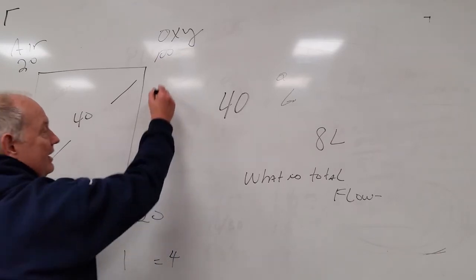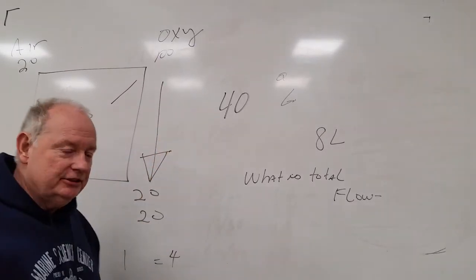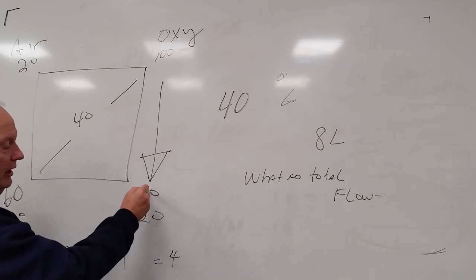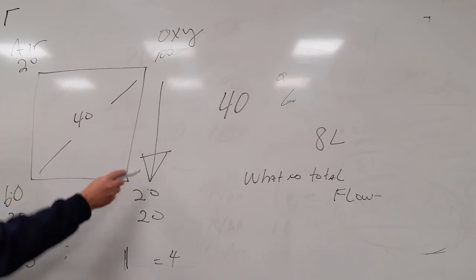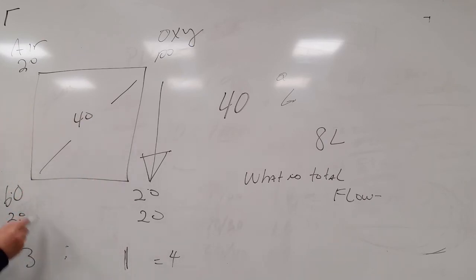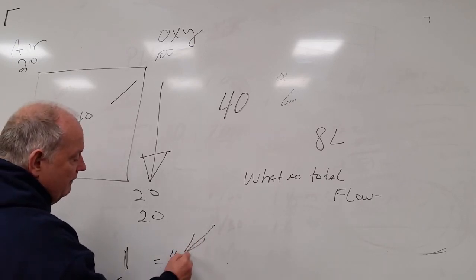Then divide by the oxygen. You get the oxygen ratio. 20 by 20 is 1. 60 divided by 20, the oxygen, and you get 3. So your ratio is 3 to 1. And that is 3 air to 1 oxygen. Add those together to get your flow factor of 4.